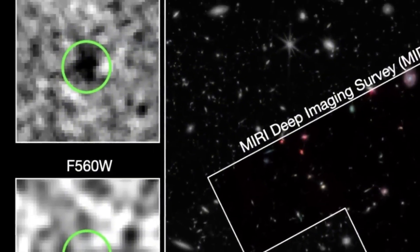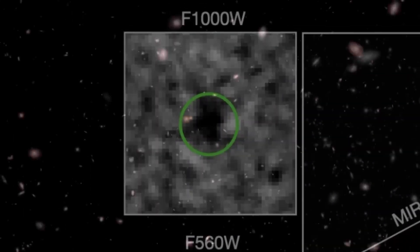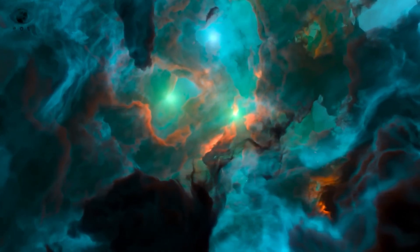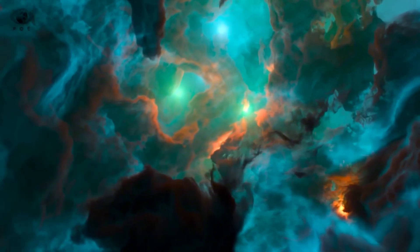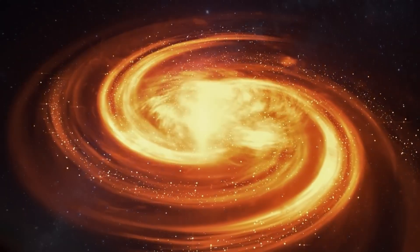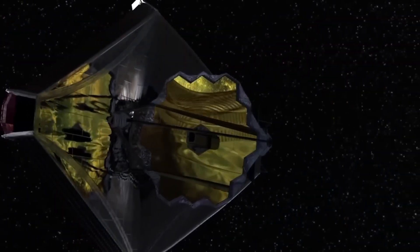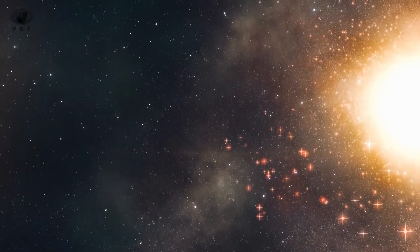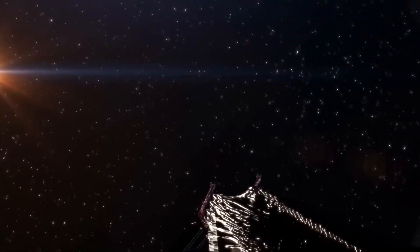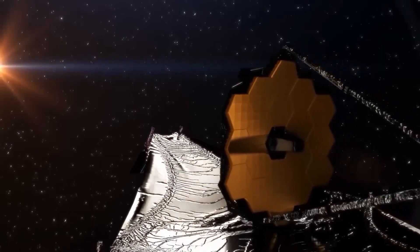But here's the impossible part. It's too massive, too bright, and too evolved to have formed so soon after the Big Bang. By our current theories, there simply wasn't enough time or matter to form galaxies like this in the early universe. And yet, here it is, and it's not alone. Webb has now found dozens more just like it. Each one is a cosmic paradox, breaking every rule we thought we understood about the early universe.